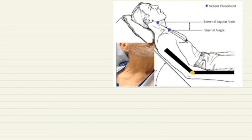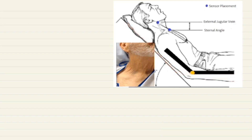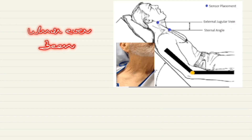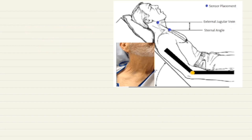How will you examine jugular venous pulsation? The ideal position of the patient should be at 45 degrees. Just like any cardiac examination, 45 degrees is the standard. But if the patient's JVP is visible in the sitting position, whichever position JVP is seen, we can utilize. If the JVP is visible in the sitting position, there is no need to make the patient lie down and examine.